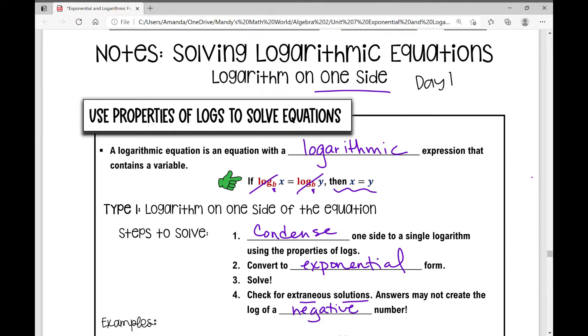Meaning it doesn't matter. For example, if I have a base of four, it doesn't matter what I raise that base of four to. This over here cannot be a negative number. That is not valid. There's no exponent that will yield a negative value.